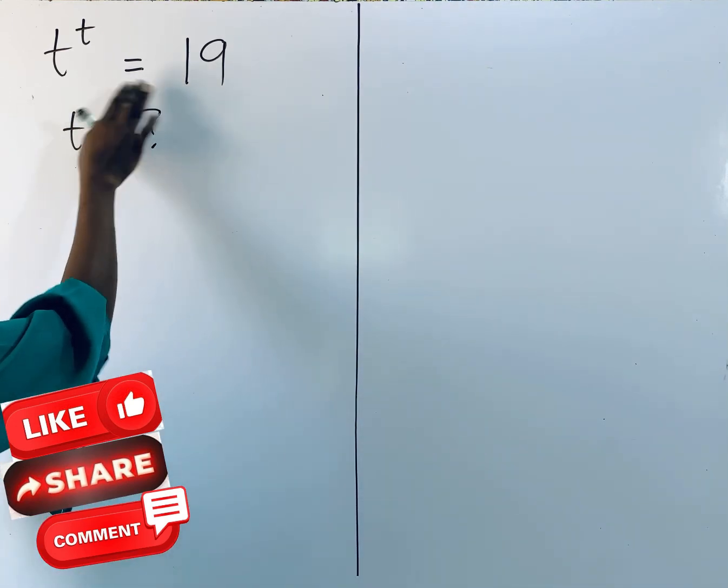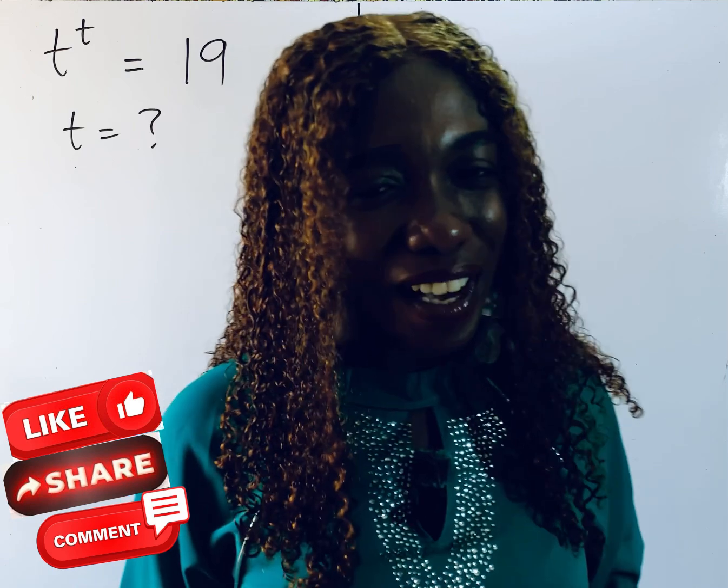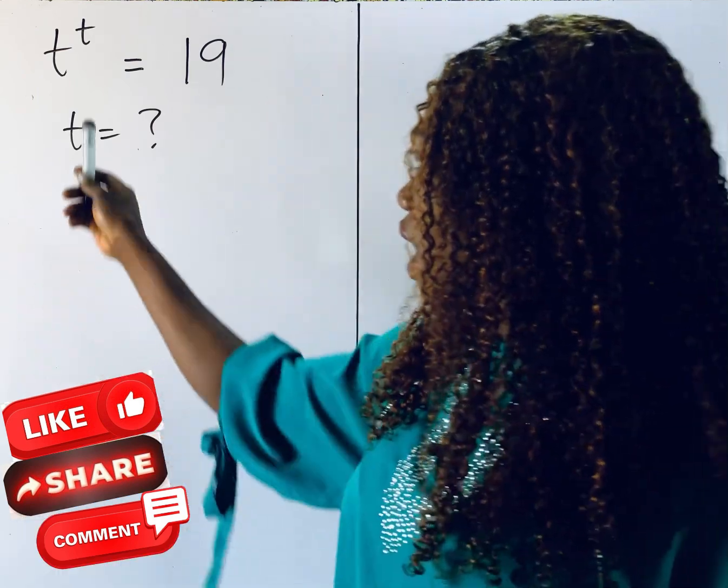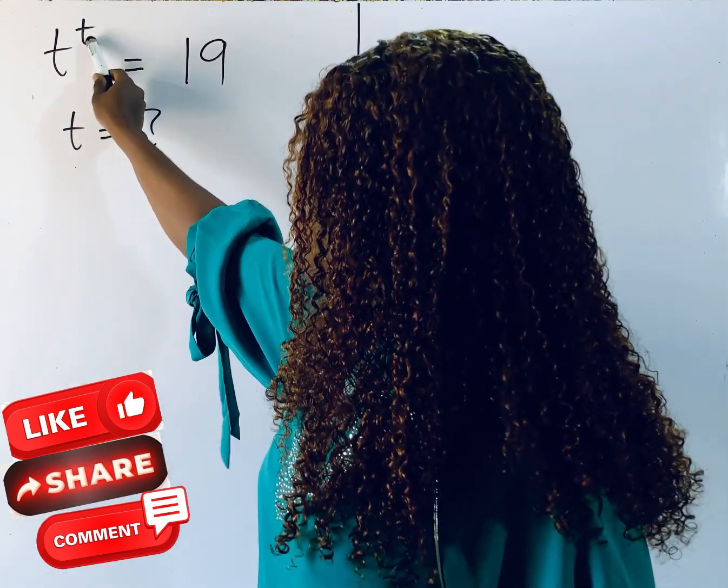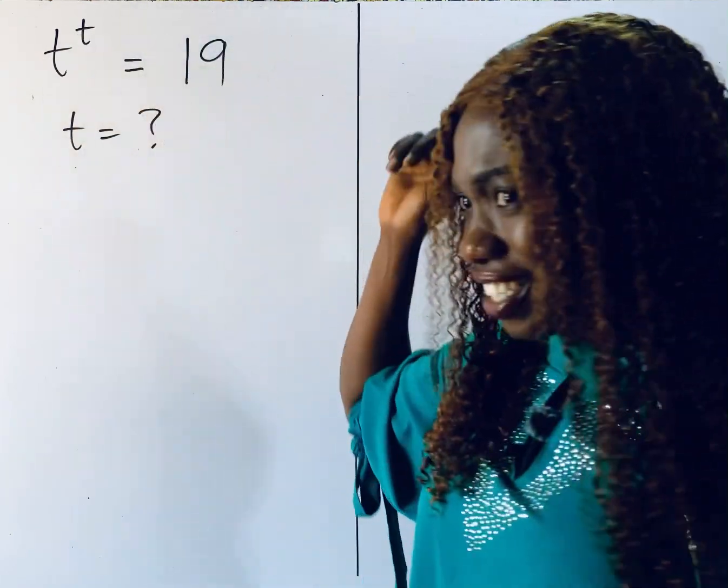So what do we do? This is what we are given: find the value of t. You'll be like, what do I do? You observe that you have t raised to the same t. So what number can you raise to itself to give you 19?